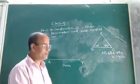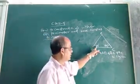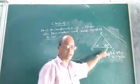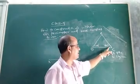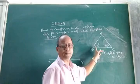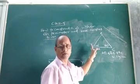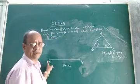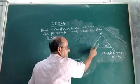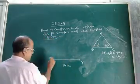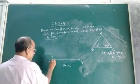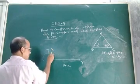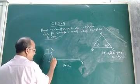Now, the next step: whatever is the measure of the two base angles — angle B is 45 degrees, angle C is 60 degrees — take half of angle B and draw it at vertex X. That means construct angle B/2, which is 22.5 degrees, at vertex X. So you construct 90 degrees, then bisect to get 45, then bisect again to get 22.5 degrees.